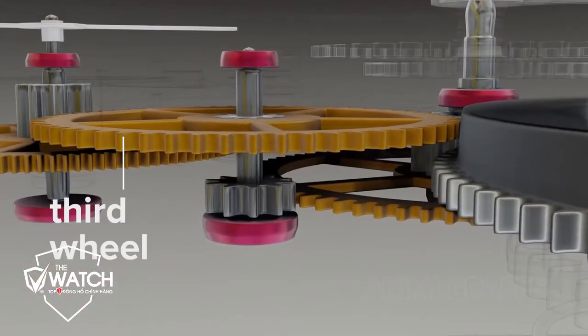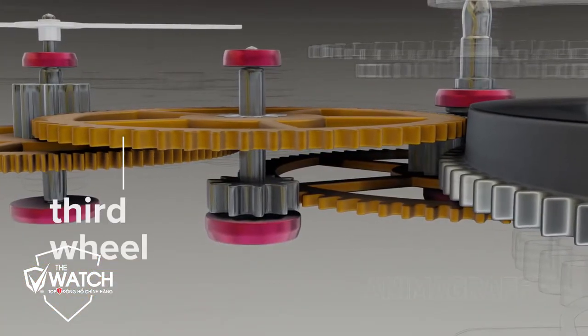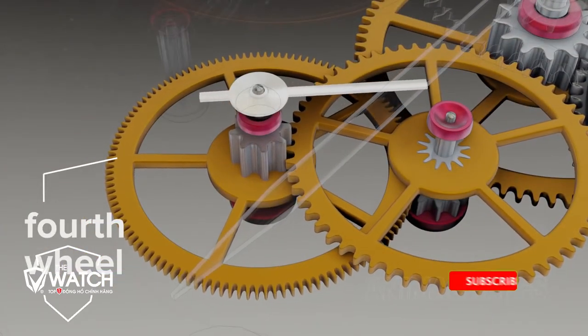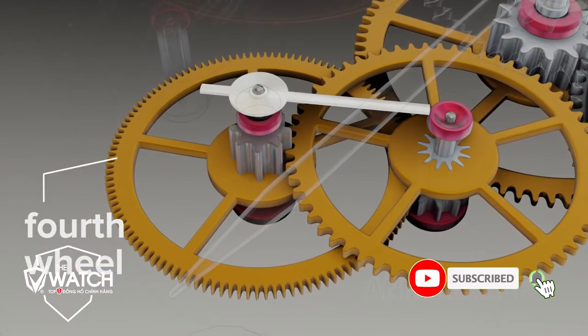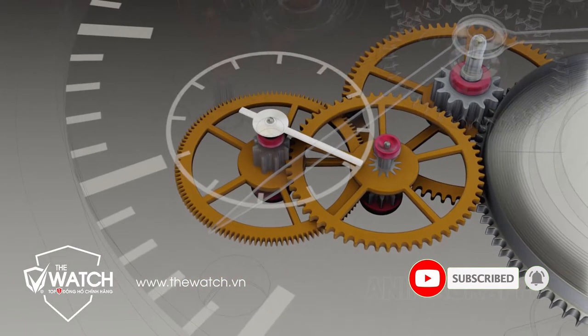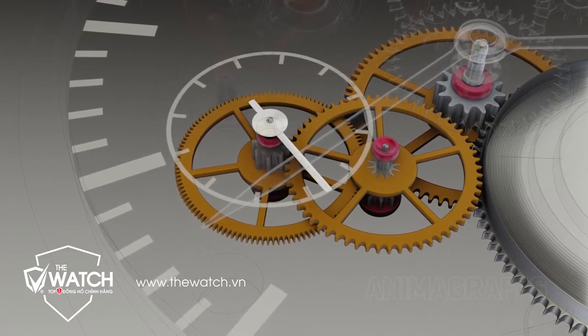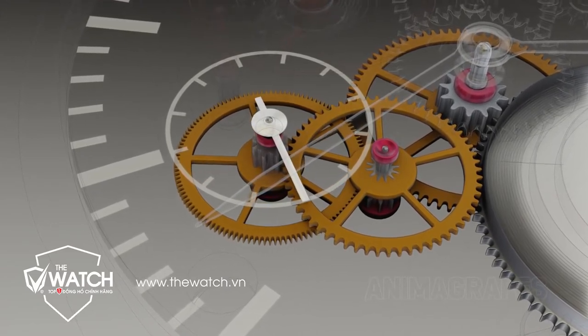The third wheel flows power through to the fourth wheel. The fourth wheel rotates once per minute in incremental ticks and holds the seconds hand. Again, marks on the watch face can make it easier to see how many seconds have passed within one full minute-long revolution.